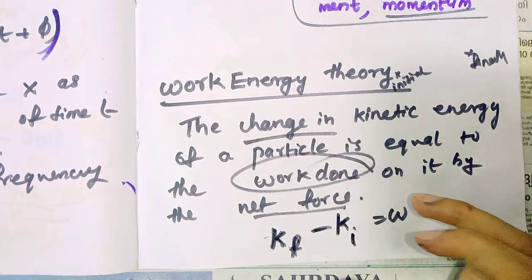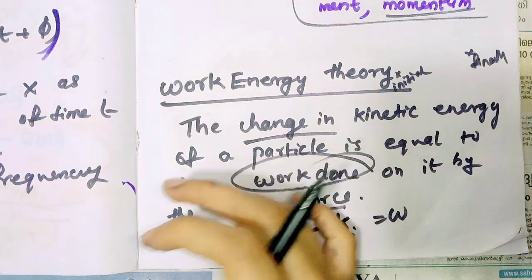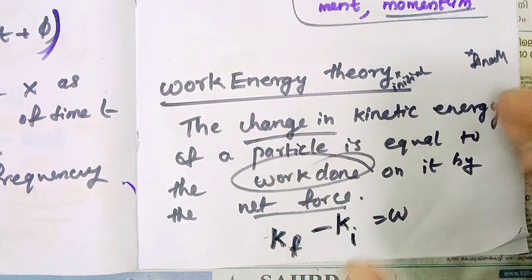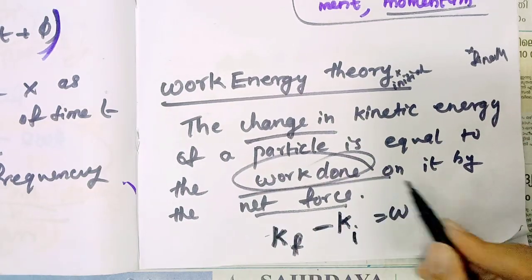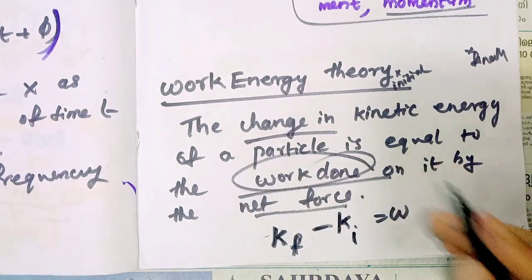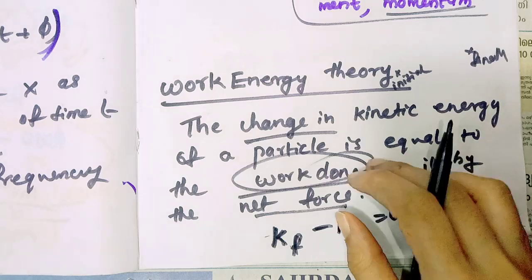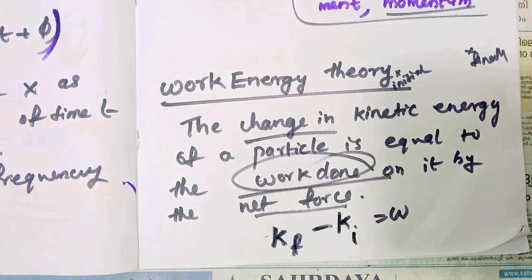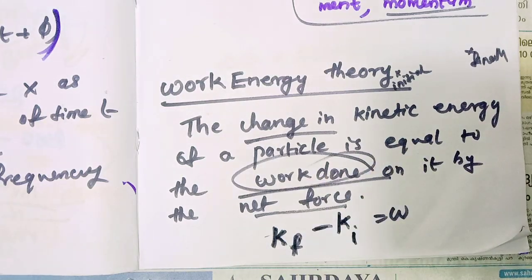So, change in kinetic energy is equal to work done on the object by the net force. Change in kinetic energy is equal to work done. We will talk about force in order to understand work done.